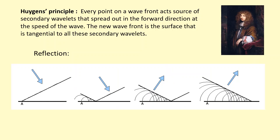Huygens was able to successfully explain reflection using his principle. In this diagram, when the wavefront touches the boundary at the reflective surface, it emits wavelets, and these wavelets superpose to produce a new wavefront. The new wavefront travels obeying the law of reflection, meaning the angle of incidence and the angle of reflection are equal.